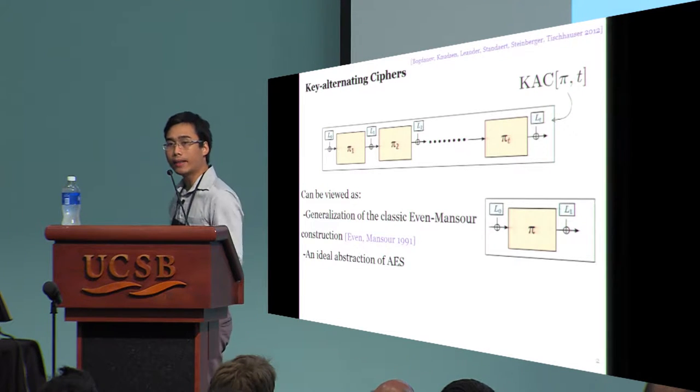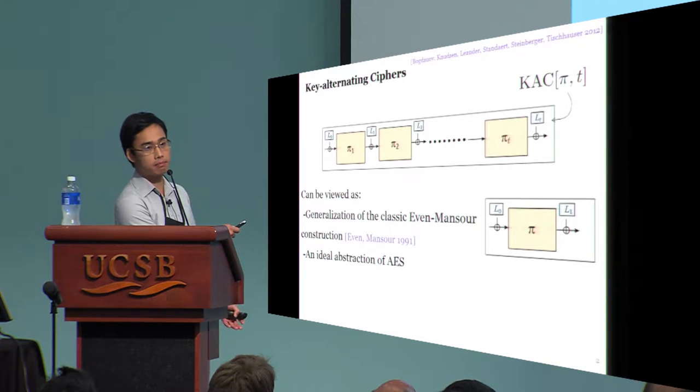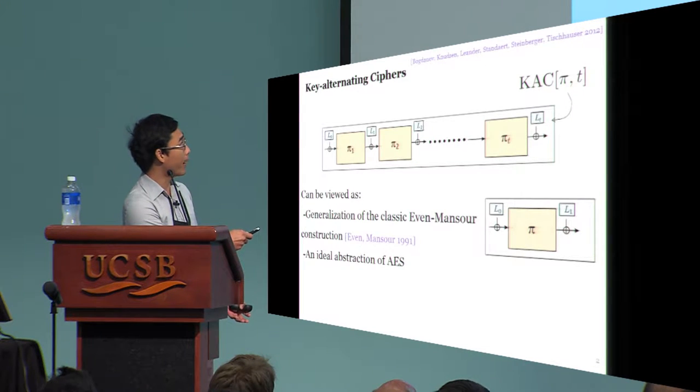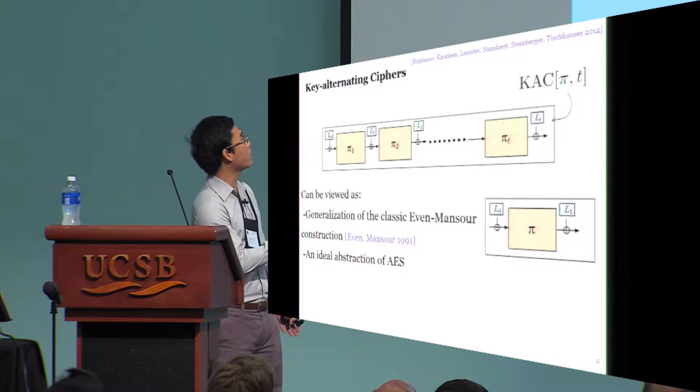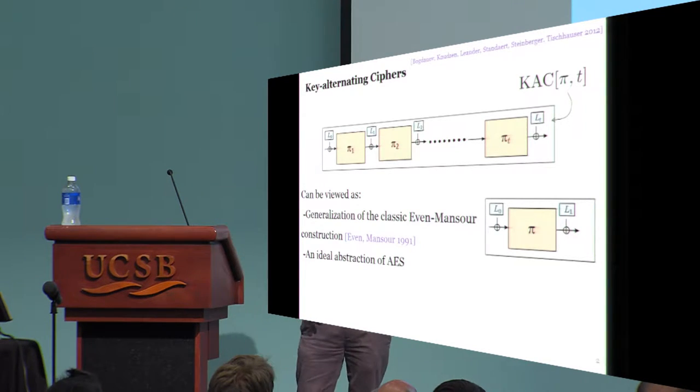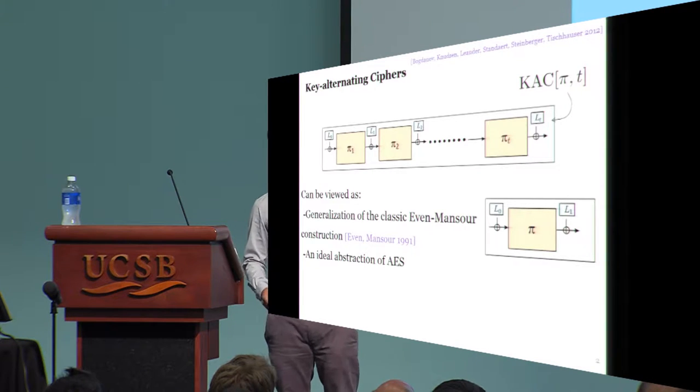From this, one can directly generalize to a t-round construction based on t public permutations, pi 1, pi 2 up to pi t, and t plus one sub-keys, L0, L1 and so on.